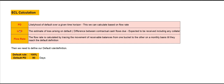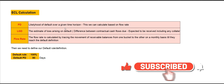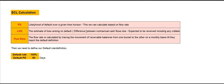The first one is PD. PD means the probability of default. Probability of default means the likelihood of default over a given time horizon. We can calculate this PD based on flow rate, which I will explain shortly.